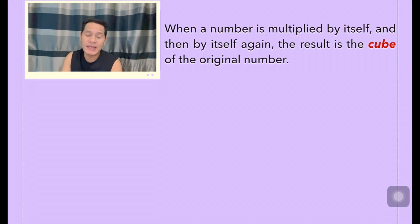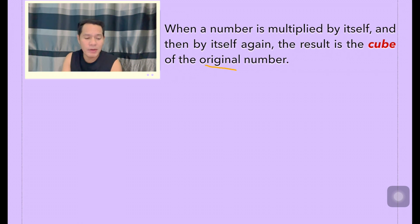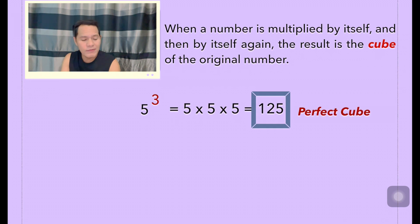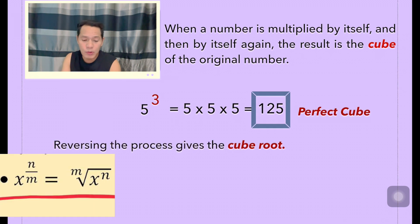Next, when a number is multiplied by itself and then by itself again, the result is the cube of the original number. So if I have 5 to the power of 3, meaning you multiply 5 by itself 3 times — 5 times 5 times 5 — that is equal to 125. And 125 here is an example of a perfect cube. Now, reversing the process gives the cube root.